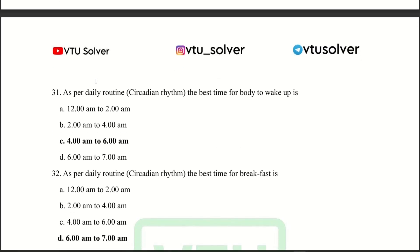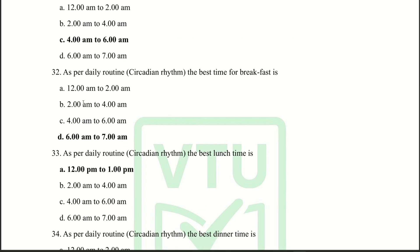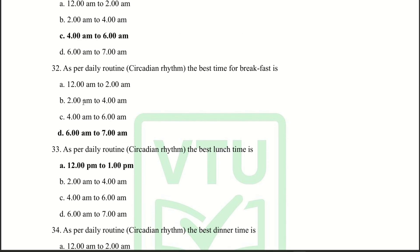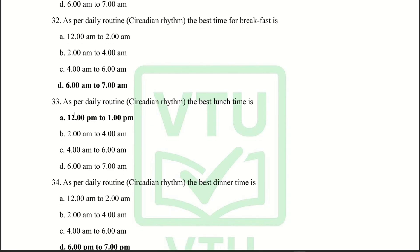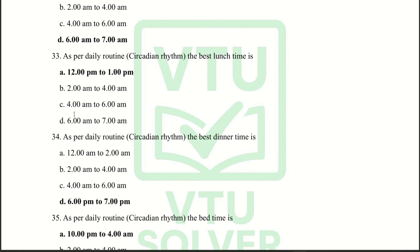Next question: As per daily routine, the best time for the body to activate the liver is 12am to 2am. Next question: The best time for the body to wake up is 4am to 6am. Next question: The best time for breakfast is 6am to 7am.